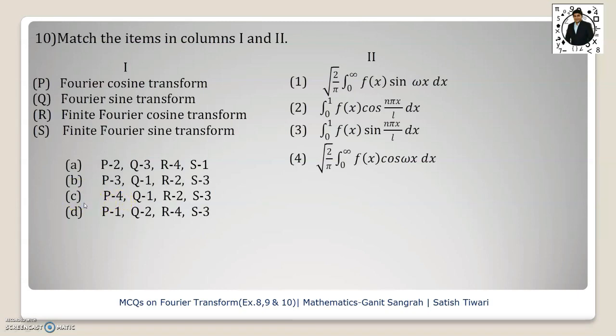If you want to check whether option c is correct or not, you can verify the remaining entries. Q matches with 1 means Fourier sine transform is given by this formula—it is correct. Then finite Fourier cosine transform will be given by the second formula and finite Fourier sine transform is given by the third one. So option c is the correct option.